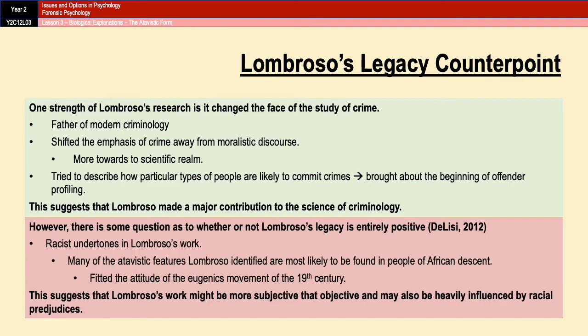However, equally, there is some question as to whether or not Lombroso's legacy is entirely positive, as suggested by De Lisi in 2012. Because whichever way you look at it, there are very racist undertones in Lombroso's work. Many of the features that Lombroso identified as being atavistic — for example, curly hair or dark skin — are most likely to be found among people of African descent. So technically, he's basically suggesting that people of African descent are more likely to be criminals. That is, unfortunately, a view that fitted in with the 19th century eugenics movement.